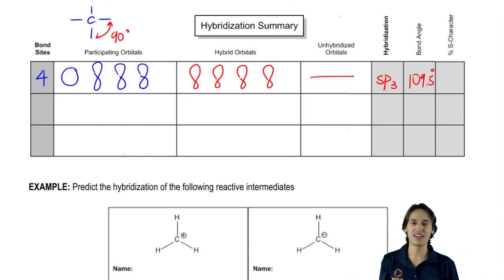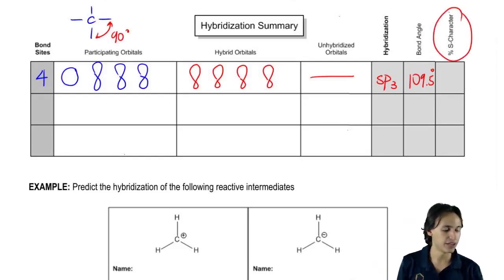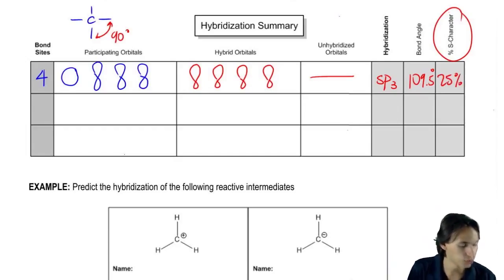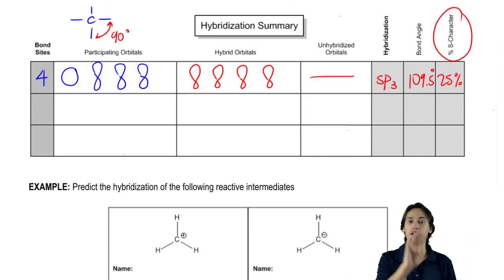Then finally, what's the s character, percent s character? Well, all that is is it's a percentage of s. What part of the entire thing is the s? So I have four orbitals total. One of them is s. So overall, what percentage is made out of s? 25%. What I'm trying to say is that if you have four and one of them is the s, your percentage of s character is going to be 25%. Why is this important? Because when we get to the acids and bases chapter, we're going to need to know that. We're actually going to need to know the s character to predict some types of acidities.